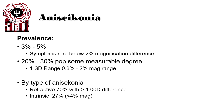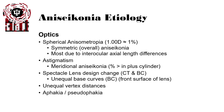Anisoconia caused by refractive sources can have a number of different origins. It can be caused by spherical anisometropia, which causes an overall change in image size — often due to axial length differences. Meridional astigmatism can cause meridional anisoconia, distorting only part of the field in the horizontal or vertical plane. Some spectacle lens designs can either cause anisoconia or correct it, which we will get into later.